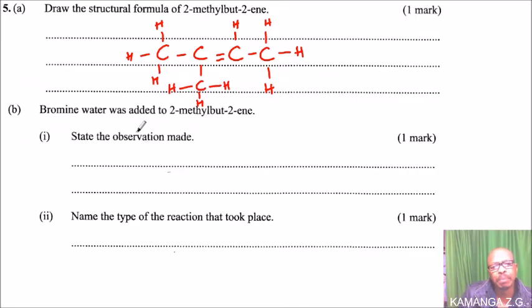So we can answer that by stating: yellow color of bromine water turns colorless.